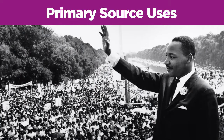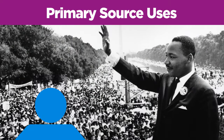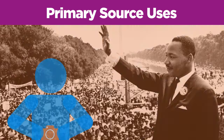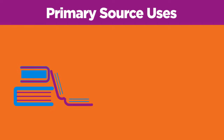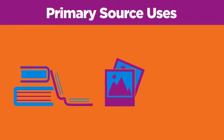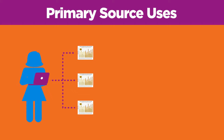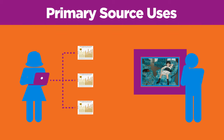So when should you use primary sources? Use primary sources when you want to get a sense of what it was like to experience something in person. For example, you may want to read an eyewitness account, view photographs, or watch a video. You may also want to interpret data for yourself, or personally reflect on works of art and literature.